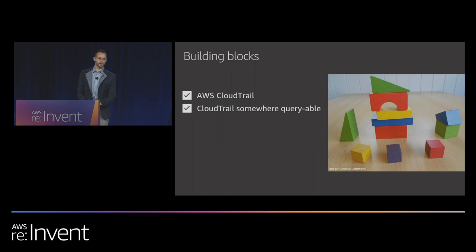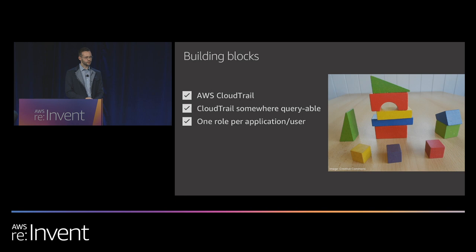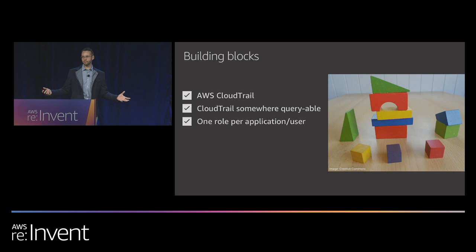We'll be using Athena to directly query the S3 buckets where CloudTrail gets delivered, but you could also dump it in Elasticsearch or use Sumo Logic like we do at Netflix — just somewhere queryable. We want one role per application or user, because it makes it easy to tell what a specific app is doing. If you have 5 or 10 applications sharing a common role, we really don't know the specific behavior for that app — we know the superset for all apps — and that breaks our ability to do anomaly detection efficiently.